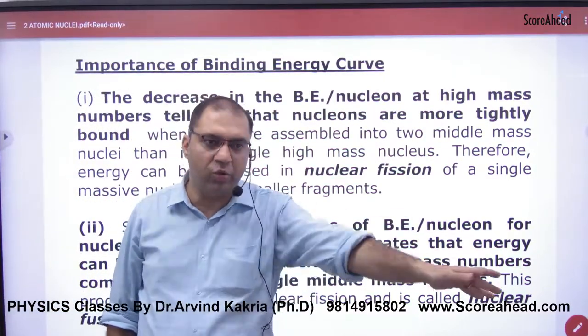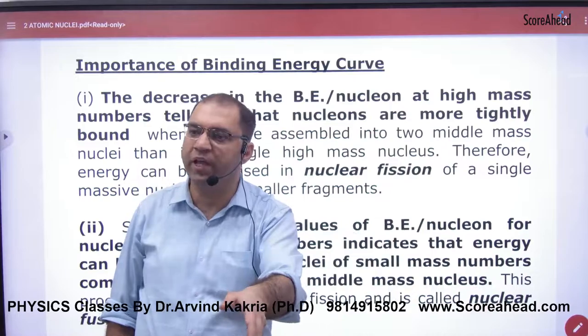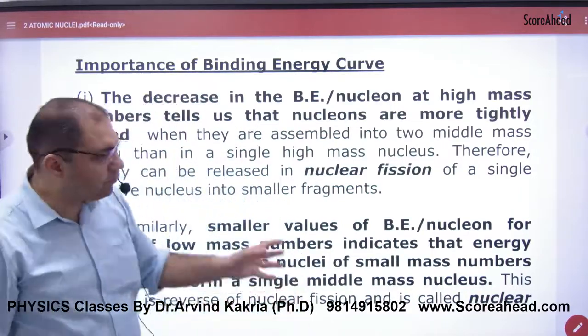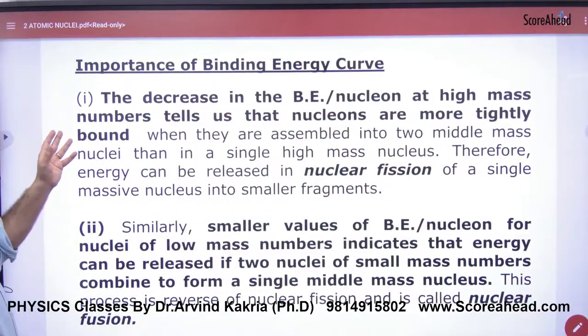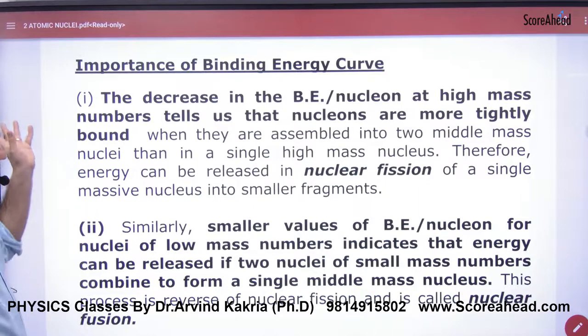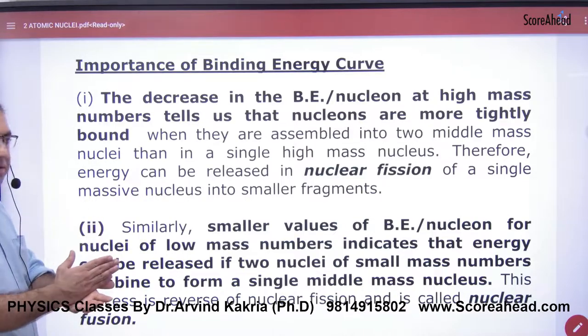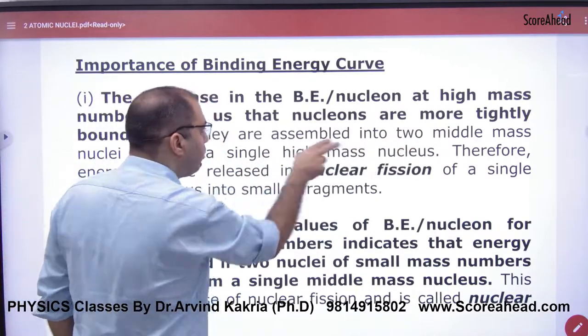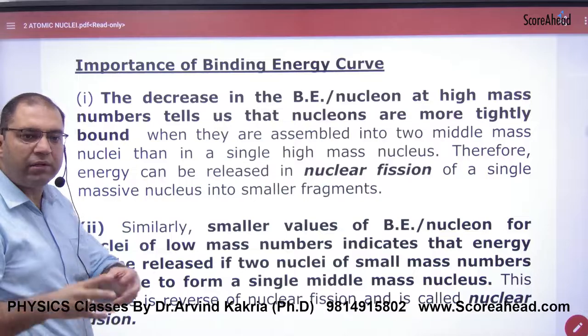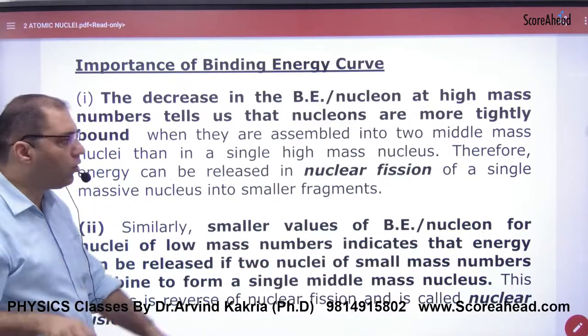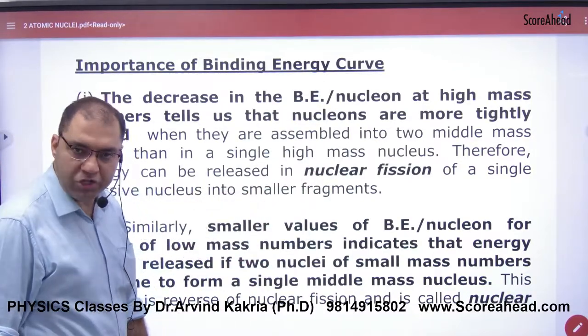The decrease in binding energy per nucleon at higher mass numbers like uranium tells us that such nuclei are more tightly bound when they are assembled into two middle mass nuclei rather than in a single nucleus. Therefore, energy is released in nuclear fission of a single massive nucleus into smaller fragments. This process is called fission.